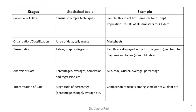The second stage — organization — involves array of data or tally marks; an example is a mark sheet. The third stage — presentation — uses tables, graphs, and diagrams; results are displayed in graphs and tables. The fourth stage — analysis of data — uses formulas like percentage, average, correlation, and regression; for our problem we can use minimum, max, outlier, average, percentage, and percentile. The fifth stage — interpretation of data — involves magnitude of percentage change and averages, enabling comparison of results among CE department or across other departments.